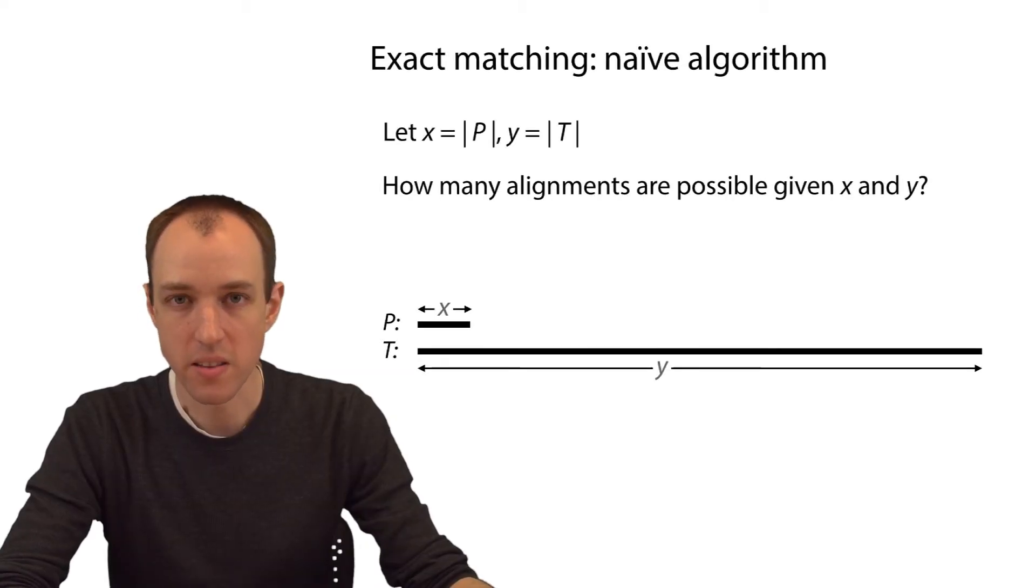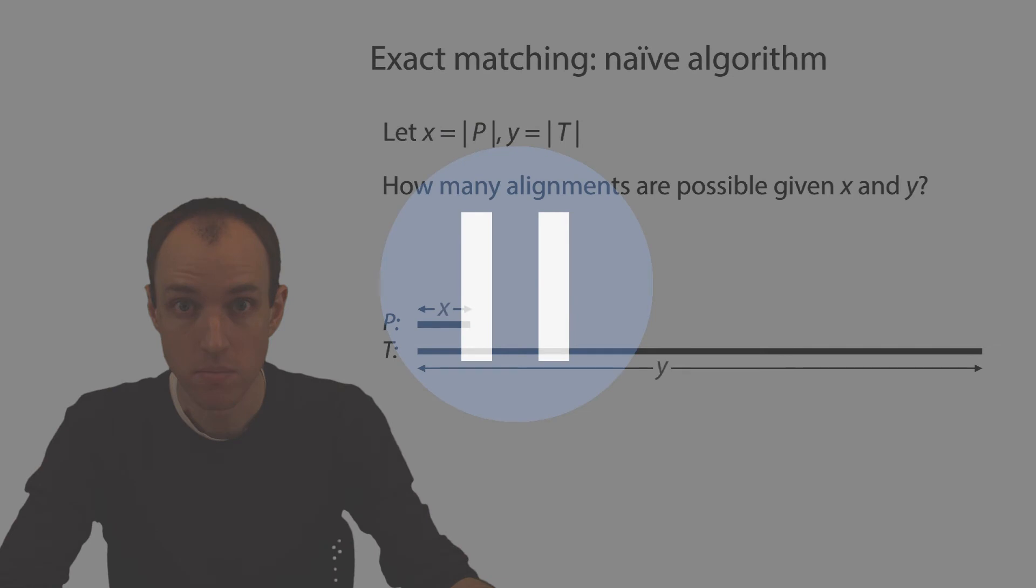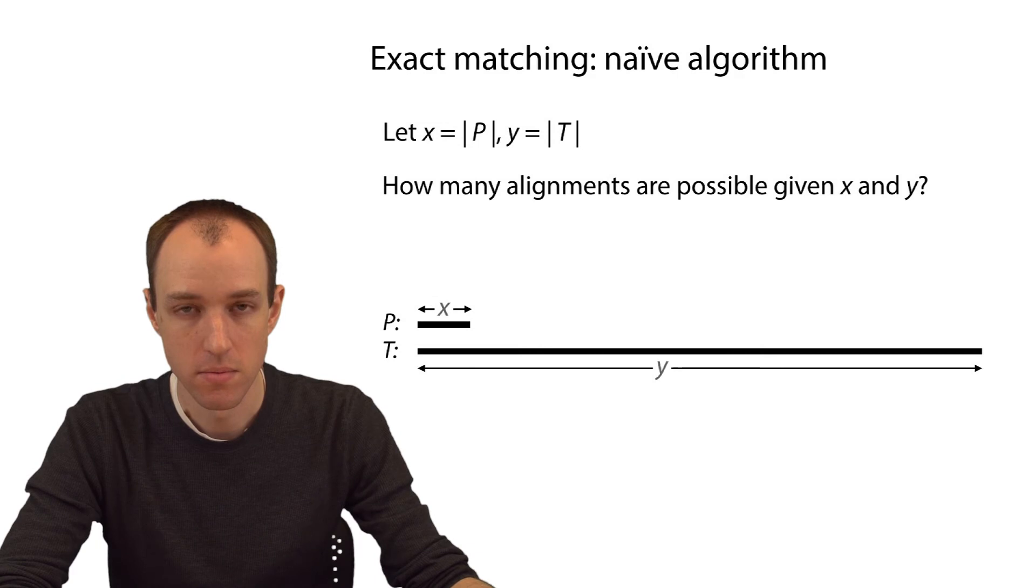Let's say that we have a pattern and a text, and the pattern has length x and the text has length y. So in this case, how many times in terms of x and y, how many times will we iterate through the outer loop? In other words, how many different alignments will we examine?